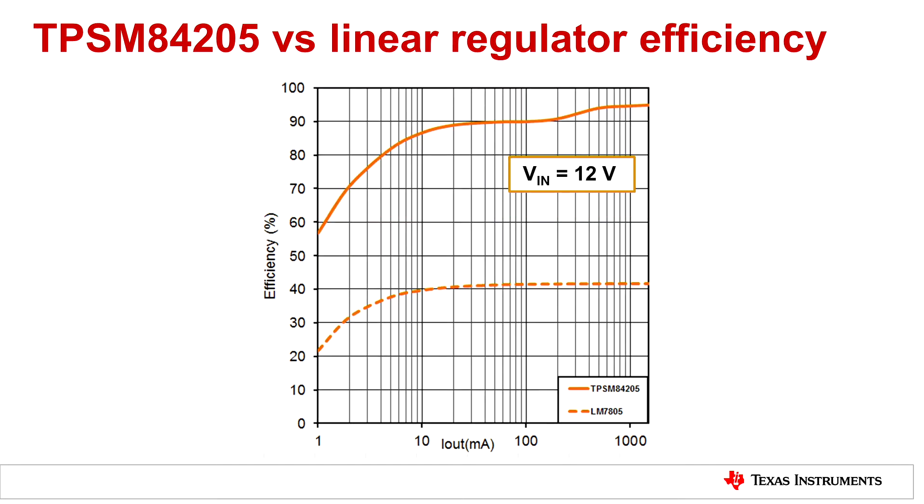So now this graph here shows the efficiency of the same devices with an input voltage of 12 volts and an output voltage of 5 volts. And you notice here that the efficiency has dropped greatly with the linear regulator, but for the TPSM 84205 the efficiency is about the same.